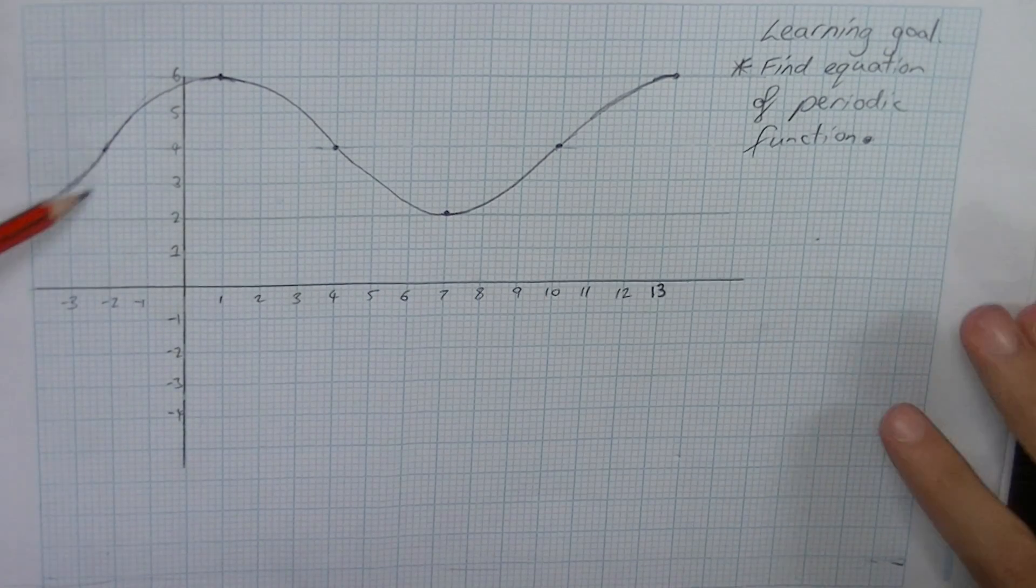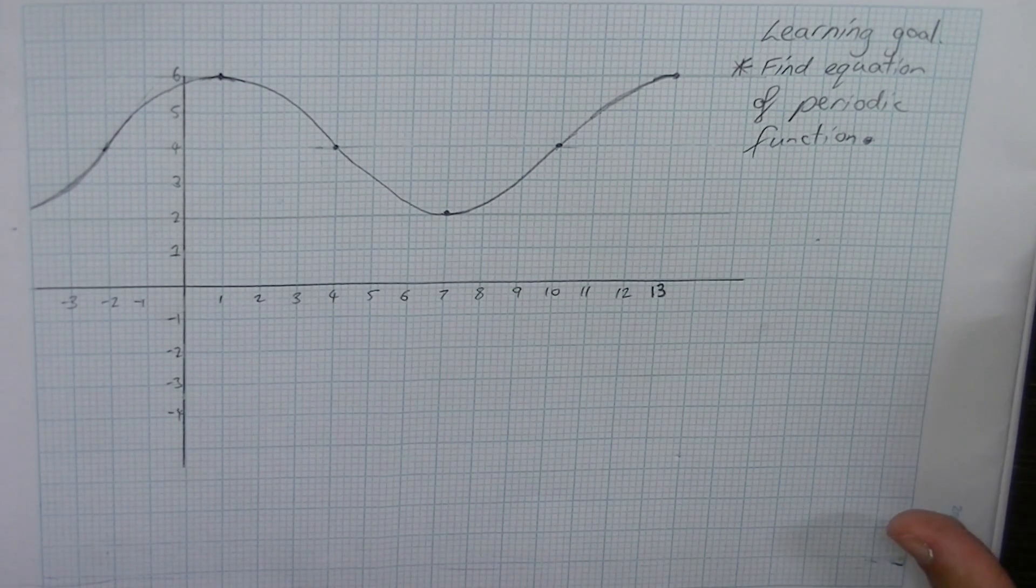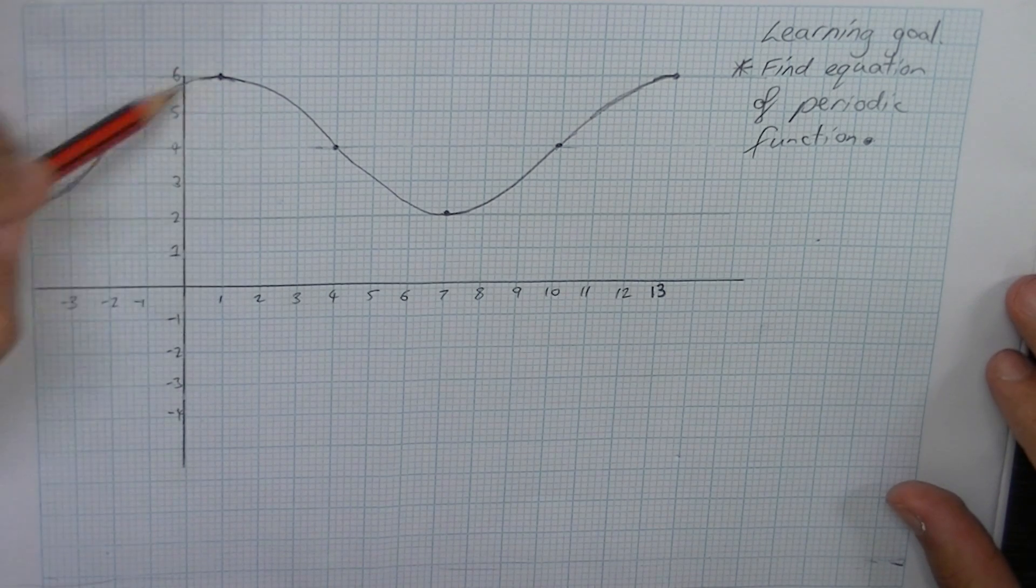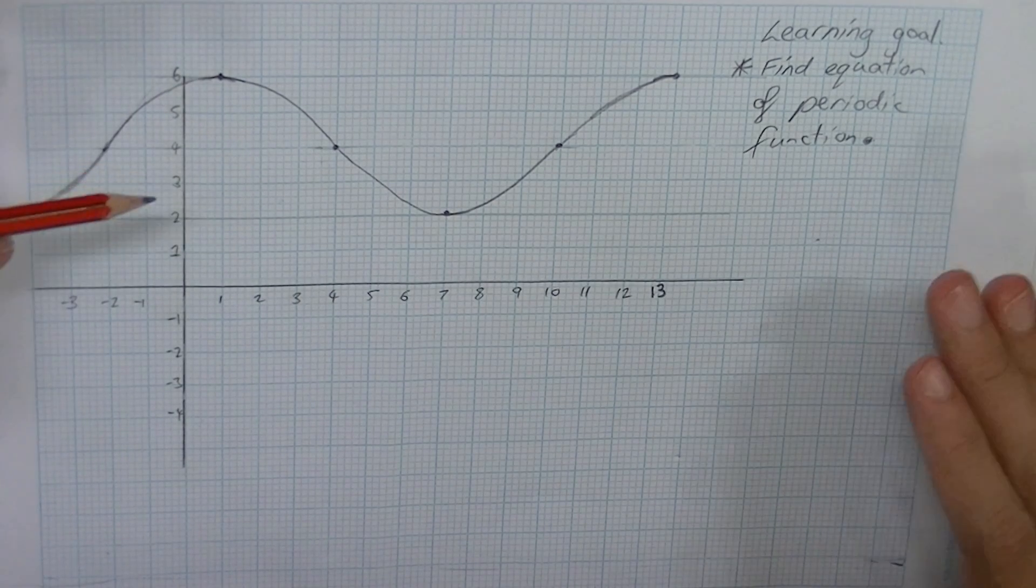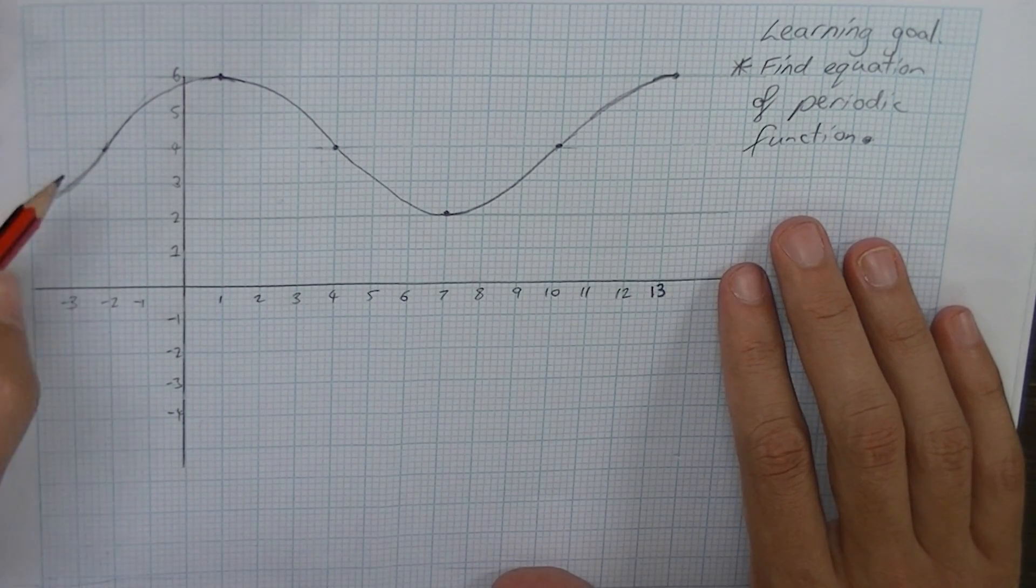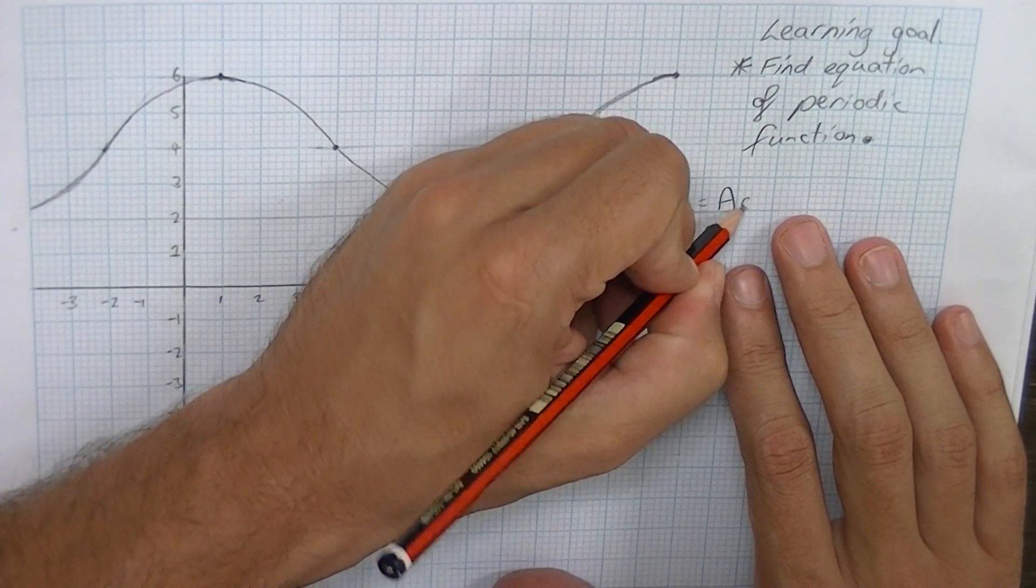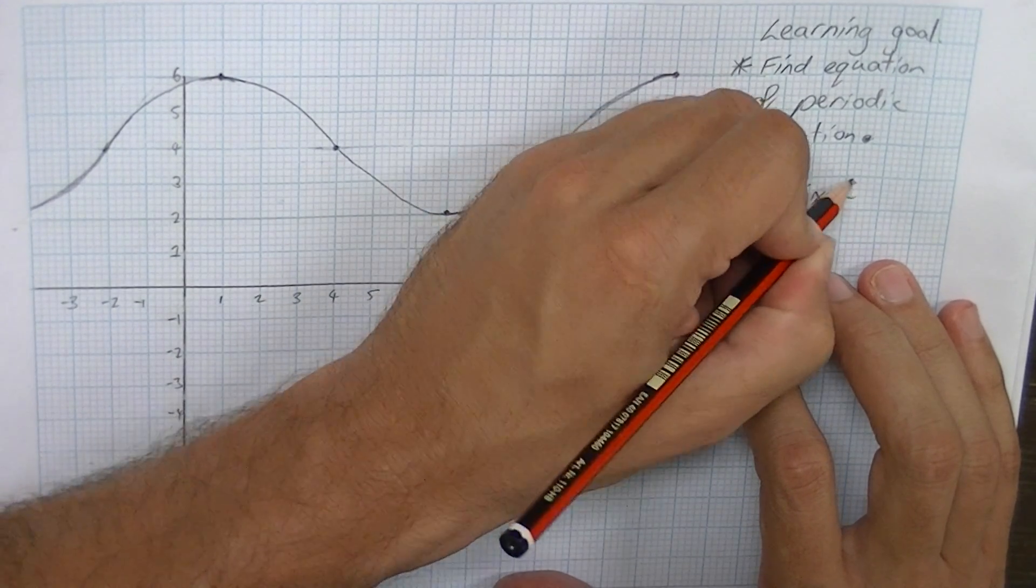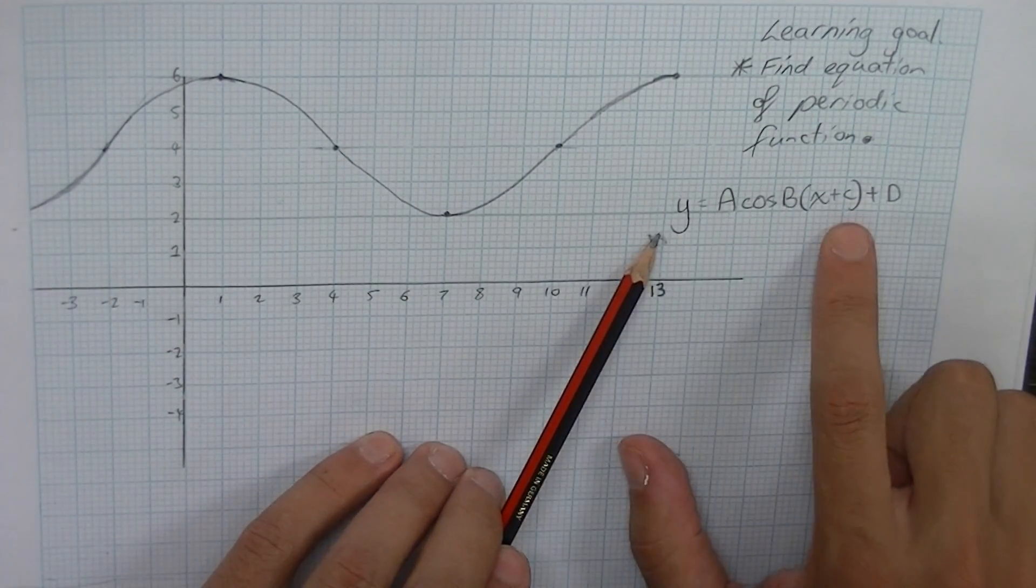Now looking at this, we can see that it's obviously a periodic function. It could be a sine curve or it could be a cosine curve. You can actually come up with either a sine equation or a cosine equation for this problem. I'm going to assume it's a cosine question. If it is a cosine question, we can say that the general form of this equation will be y equals a cosine b bracket x plus c plus d.